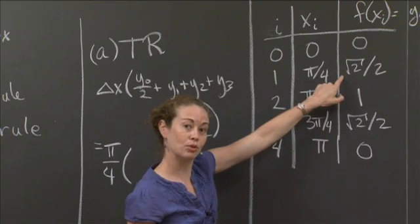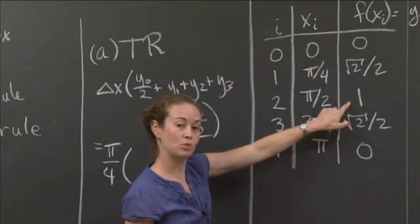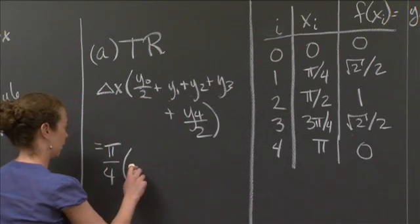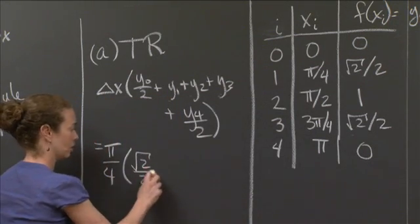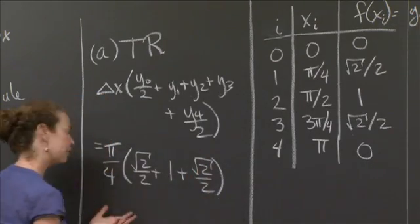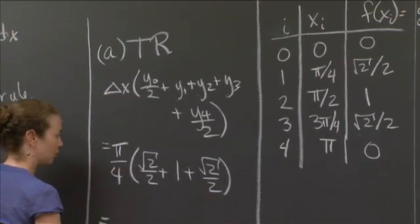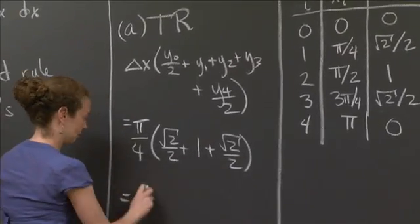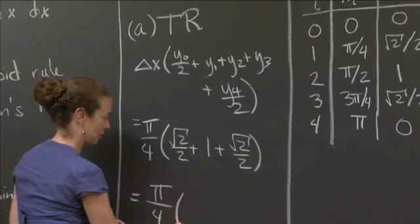So y1 is root 2 over 2, y2 is 1, and y3 is root 2 over 2. So I should get root 2 over 2 plus 1 plus root 2 over 2. And if you want to simplify a little bit, you can do that. Root 2 over 2 plus root 2 over 2 is root 2. Hopefully, you got something that looked like this.